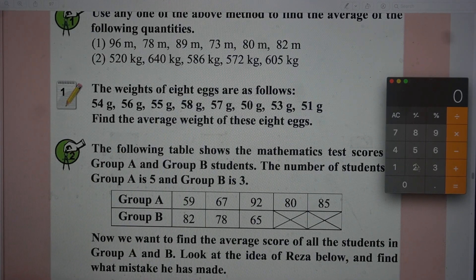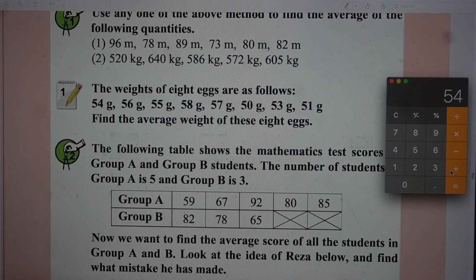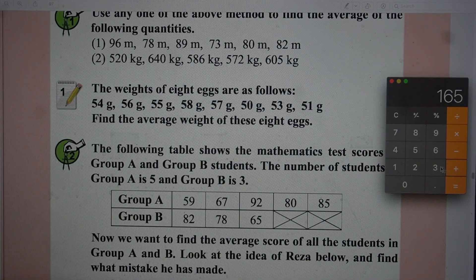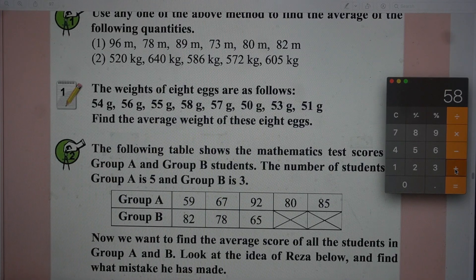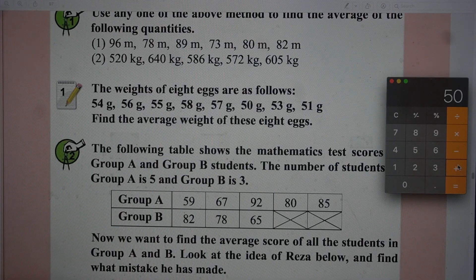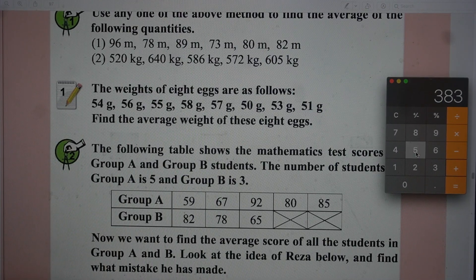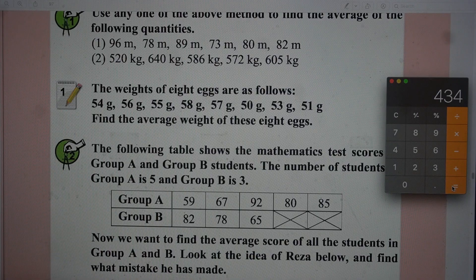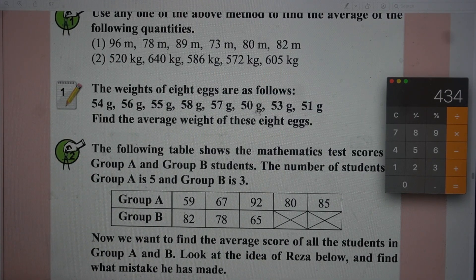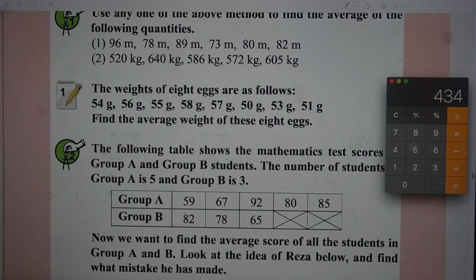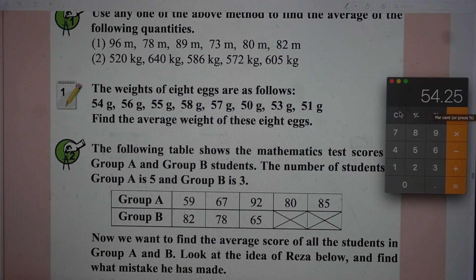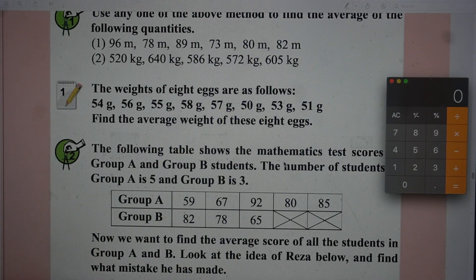Let's check by adding them up: 54 plus 56 plus 55 plus 58 plus 57 plus 50 plus 53 plus 51. The total is 434 divided by 8. I hope we got the same answer, yes, 54.25.